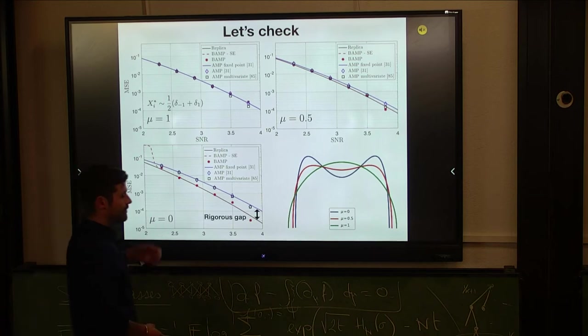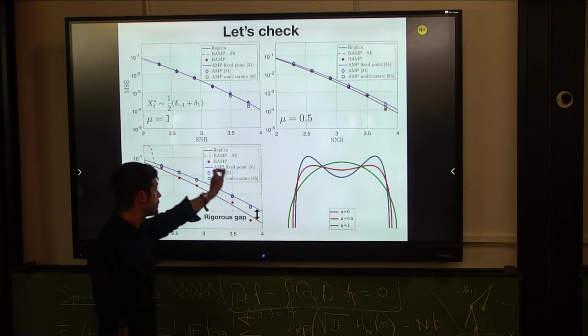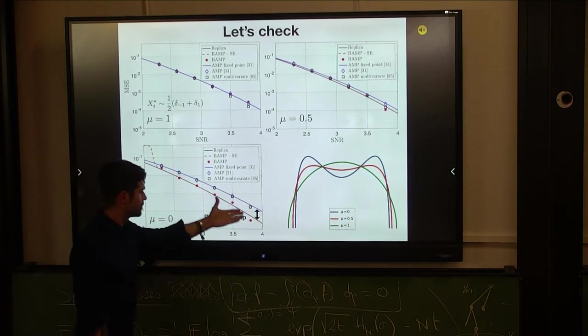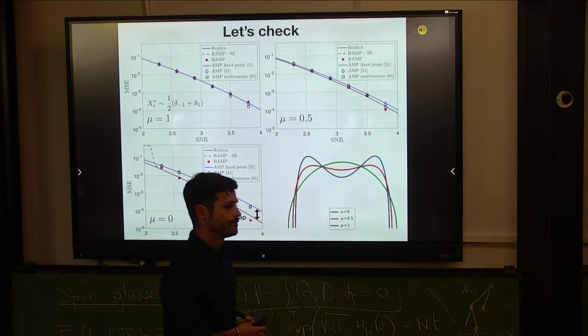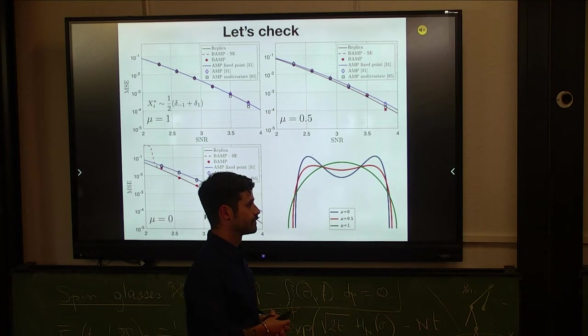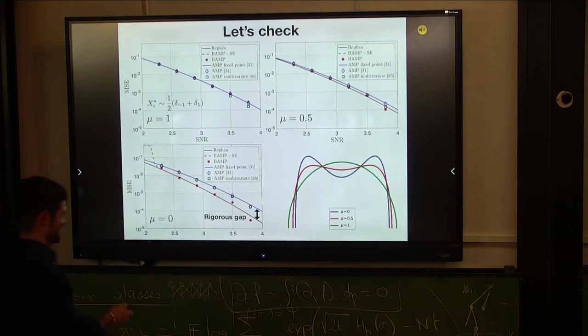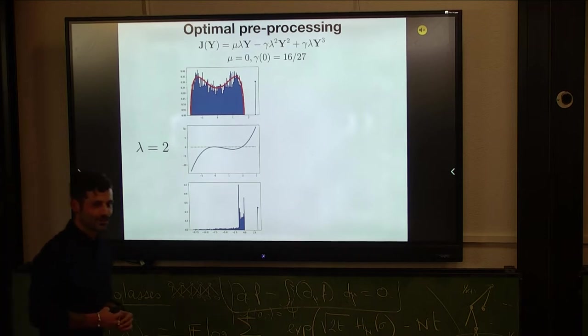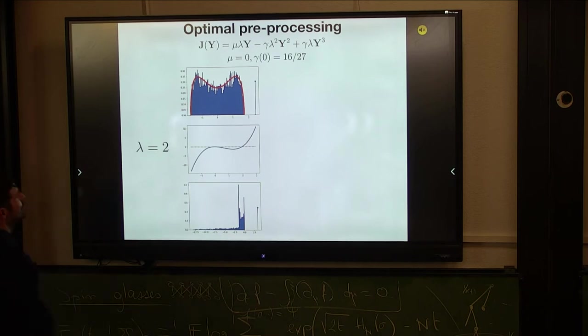Let me mention that even if the replica prediction is not yet rigorous, the fact that we improved over this previous AMP is rigorous because its fixed point is rigorous, and ours is rigorous as well. Question: When you look at the spectrum of this matrix after you apply J of the matrix, J of Y? I will show you exactly that.